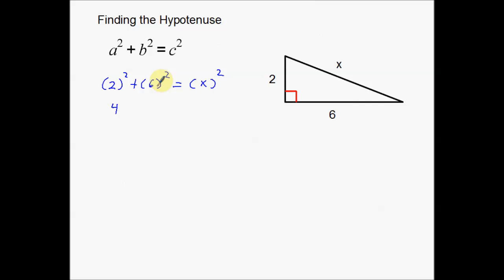Now on to solving this: 2 squared is 4, 6 squared is 36, and x squared stays as x squared. Now we have an equation, and just like any other equation we're going to solve for x. The first thing is to add these together on this side: 40 is equal to x squared.